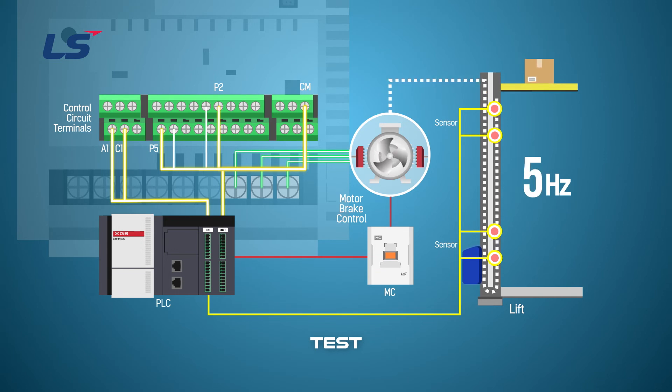When the lift passes the sensor at the top, it changes from the P5 signal to the P6 signal and it descends at 15 Hz. When it passes through the lower sensor again, the P6 terminal turns off and the P5 terminal operates and is set to 5 Hz.